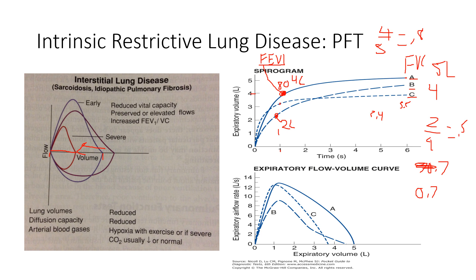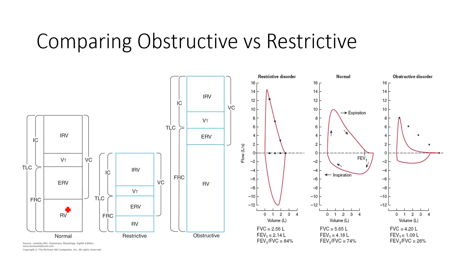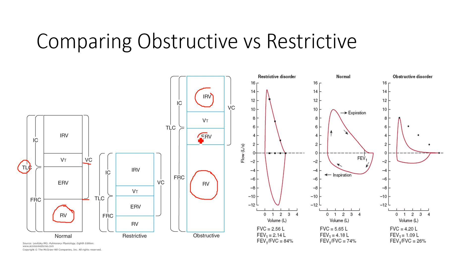Residual volume is the air remaining in the lungs at the end of a maximal expiration — there's always a little gas remaining. Vital capacity plus residual volume equals total lung capacity. In an obstructive defect with air trapping, residual volume is greatly increased, expiratory reserve volume is reduced, and total lung capacity increases — it's mainly due to trapping of air.